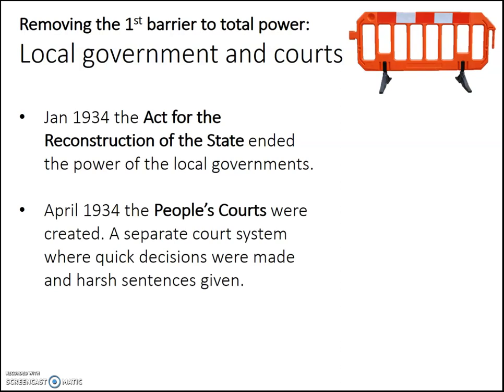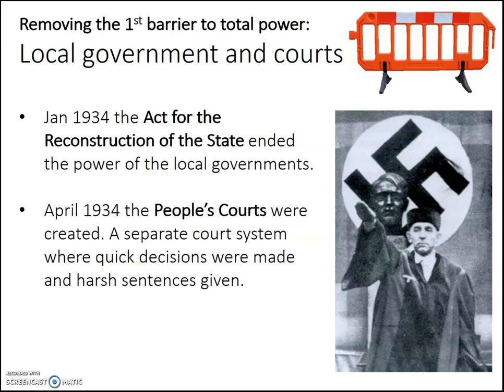Secondly, the German courts were a problem for him, so he created his own new court system called the People's Courts — here's a picture of one. In the People's Courts, which were a completely separate system, the judges all had to swear an oath to Hitler, made very quick decisions, and harsh sentences were given. As a result, the death penalty skyrocketed in Germany. So by April of 1934, he had already solved the problem of local government and the courts.